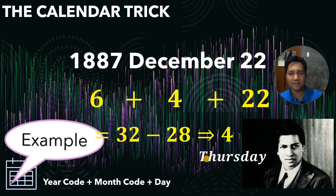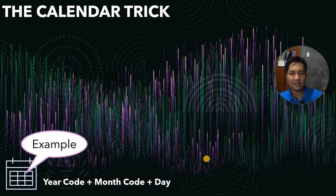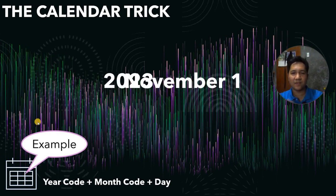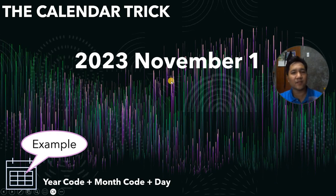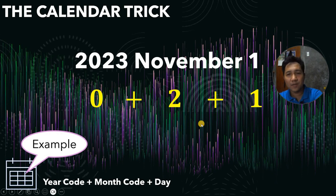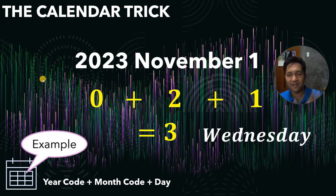Now let's have another example. We have November 1, 2023. The year code for 2023 is 0. The month code for November is 2. We add the day which is 1. So 0 plus 2 plus 1 equals 3. Since 3 is less than 7, this corresponds to Wednesday. Therefore, November 1, 2023 must be Wednesday.